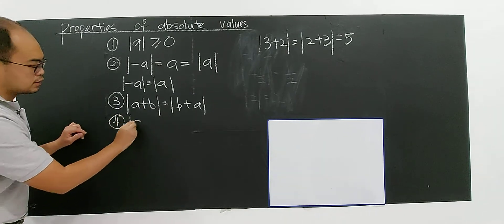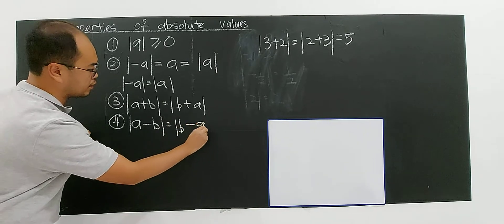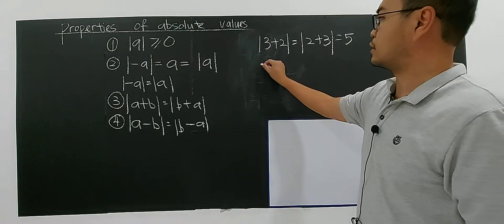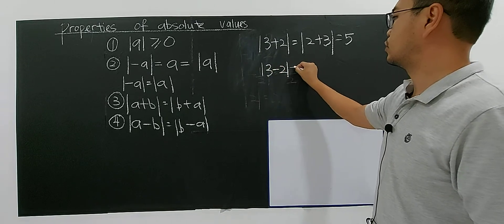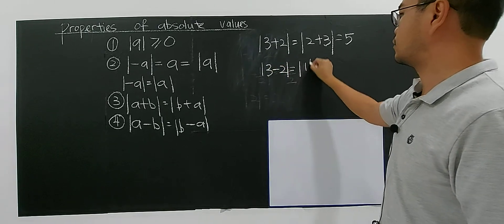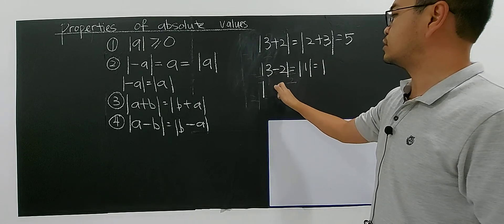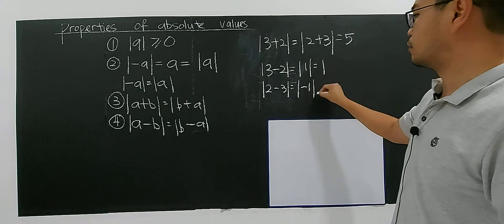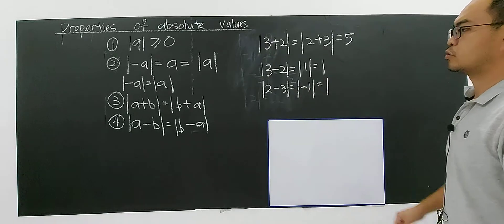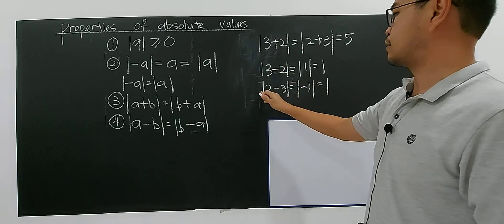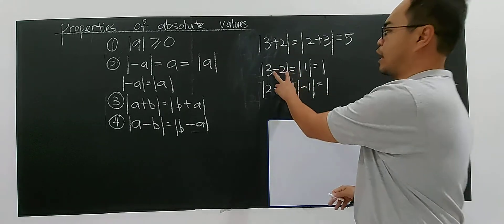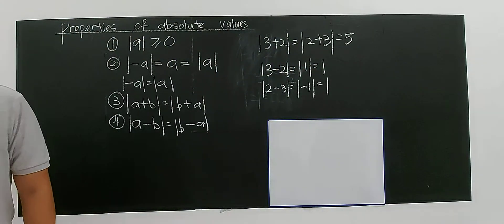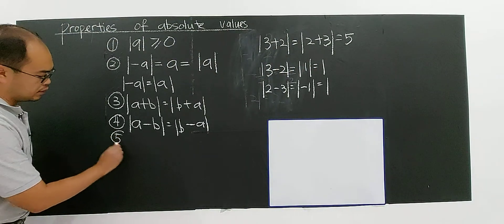The fourth property: modulus of a minus b is the same as modulus of b minus a. For example, three minus two gives one, and two minus three gives negative one, but the modulus of both is one. So modulus of three minus two equals modulus of two minus three. This holds for any numbers, giving us the general rule: |a − b| = |b − a|.